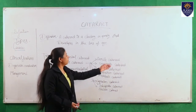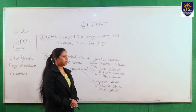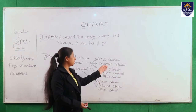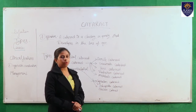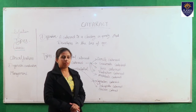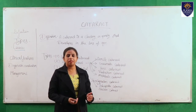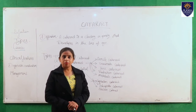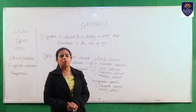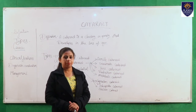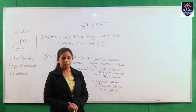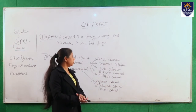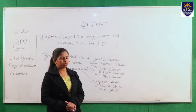Next is traumatic cataract. This type of cataract occurs in a person due to any trauma, such as any foreign material or foreign body entering the eye of the patient, causing traumatic cataract.